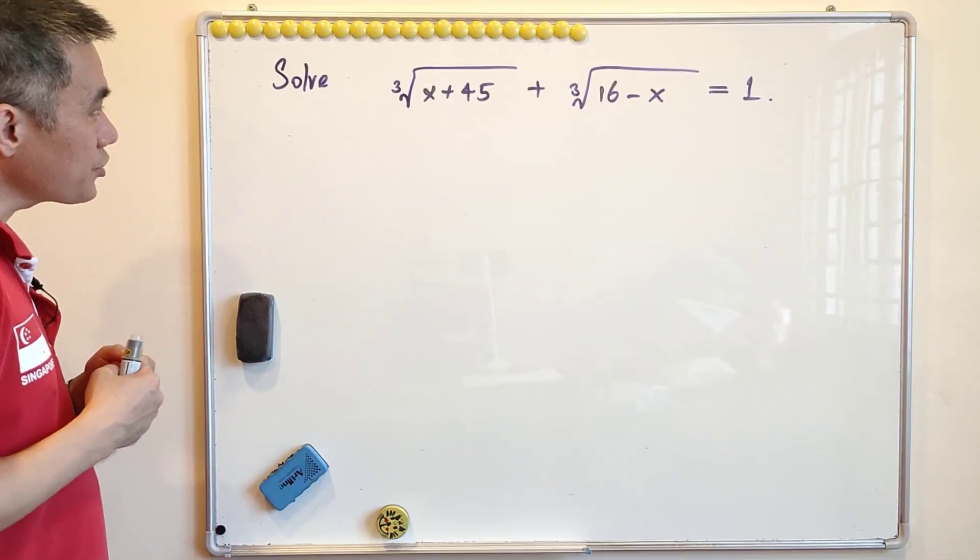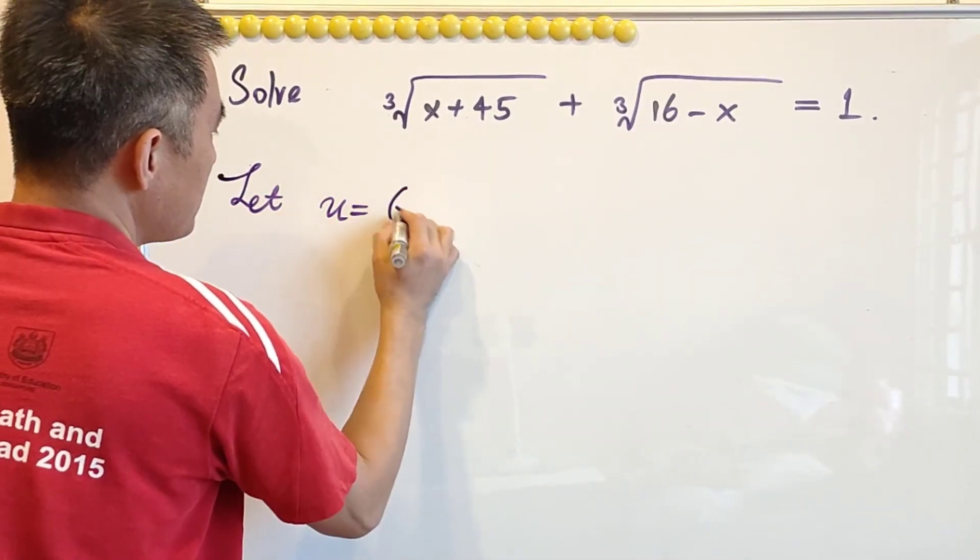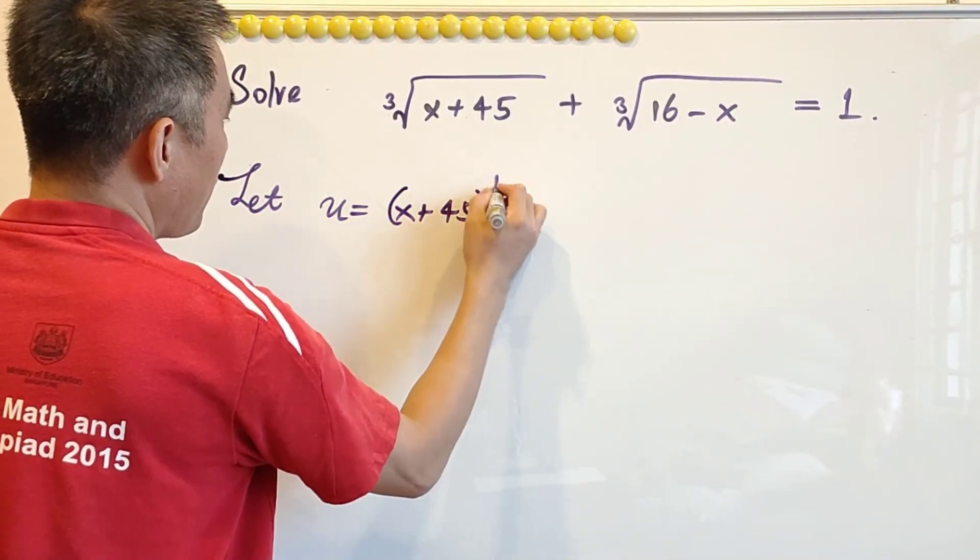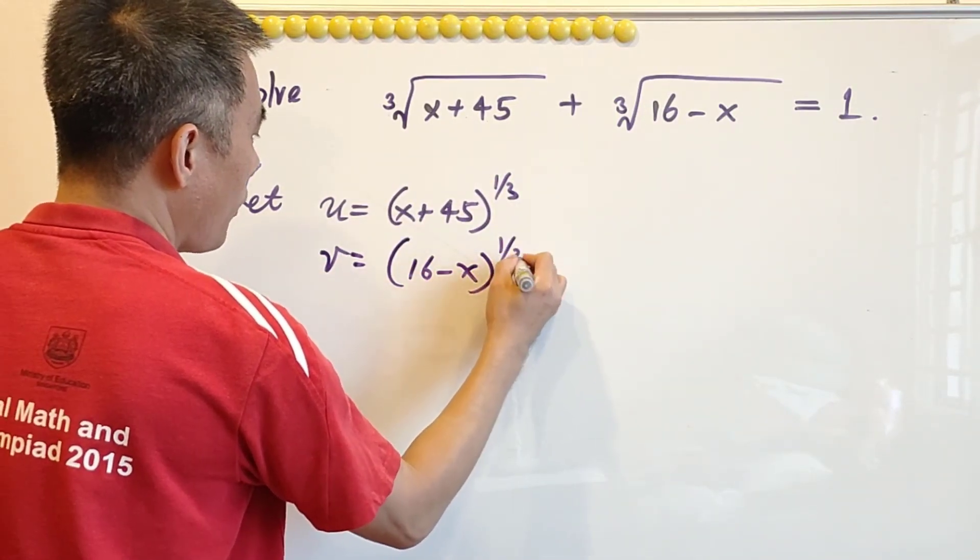This is a standard question and usually we will write u to be x plus 45 to the power of 1 over 3 and v to be 16 minus x to the power of 1 over 3.